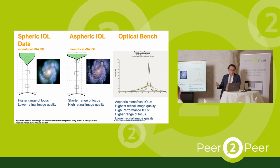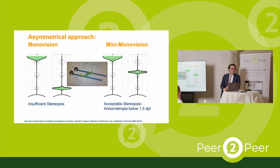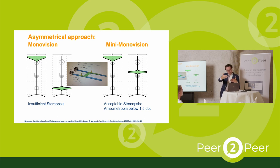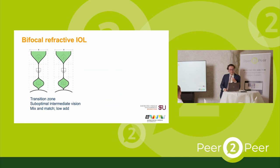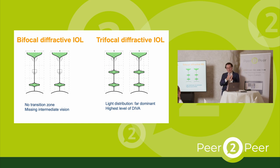On the optical bench, it's interesting: when doing EDOF testing, some of these lenses have more than one peak. If you have more than one peak, you definitely have a multifocal lens. We may also use asymmetrical monovision with EROF lenses to extend visual ability to near. Bifocal refractive lenses have a wider near function area; diffractive lenses have a more precise, shorter focus line — bifocal or trifocal diffractive.